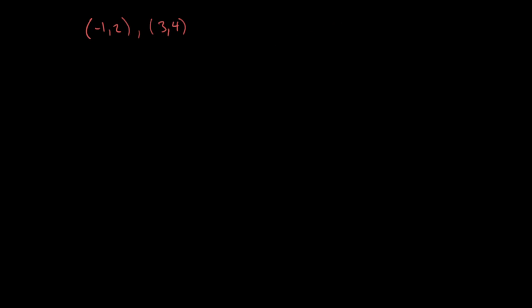Let's just give it a rough sketch with some axes. So if I have the point negative 1, 2, it's going to be roughly over here, and the point 3, 4 is going to be up here someplace. I'm trying to find the point exactly halfway between the two of them. From algebra, finding something halfway between two things sounds a lot like an average, and that's exactly what I'm going to do.